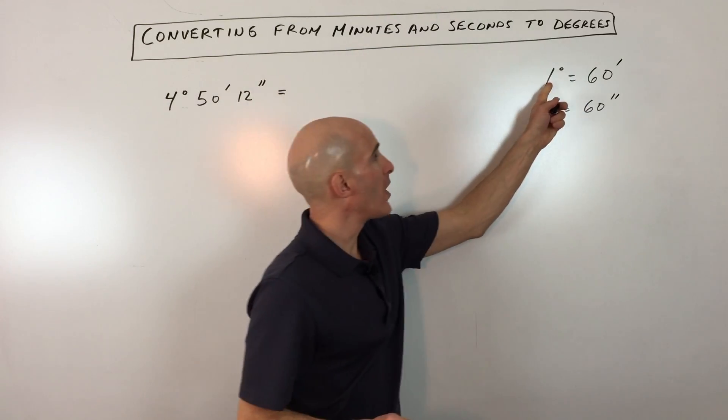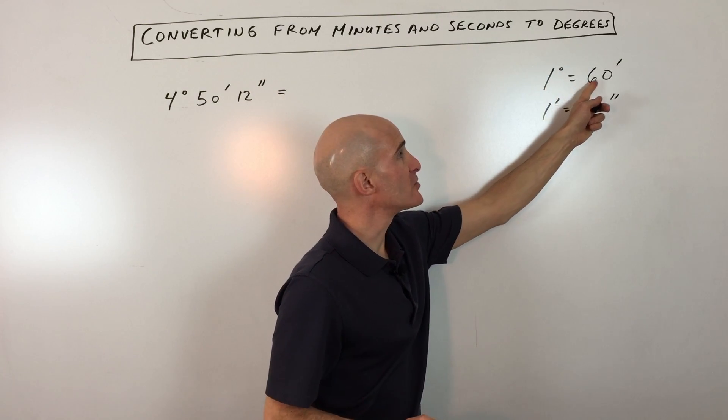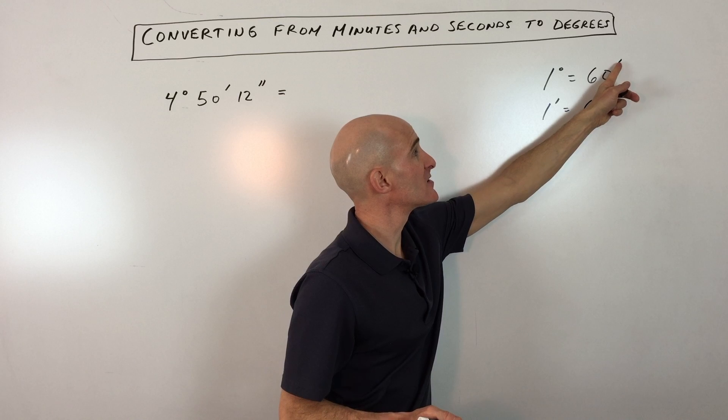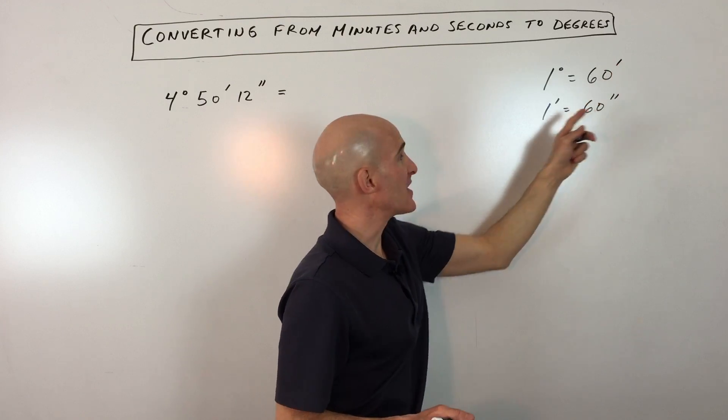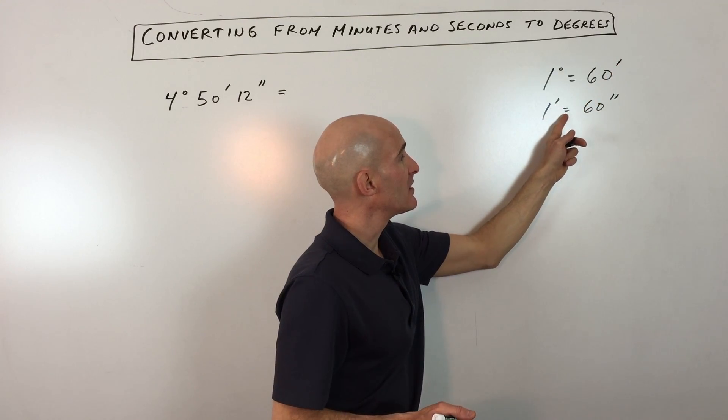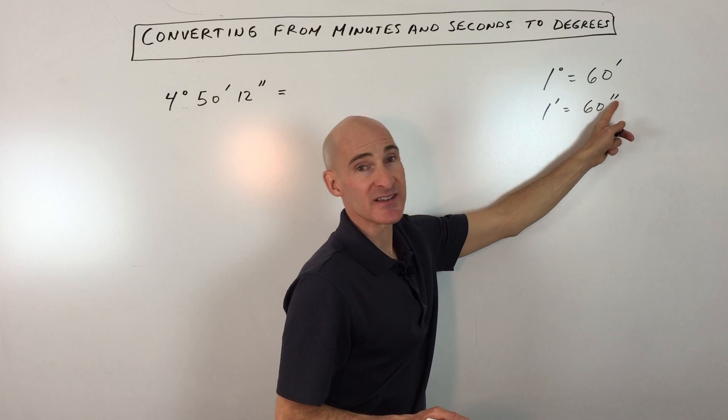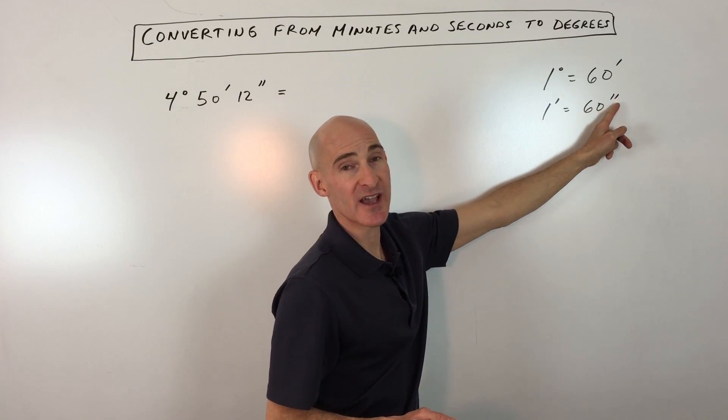So the first thing you want to know is that one degree is equivalent to 60 minutes. So that's what this little mark here represents. And then one minute is equivalent to 60 seconds. And that's what these two marks here represent, seconds.